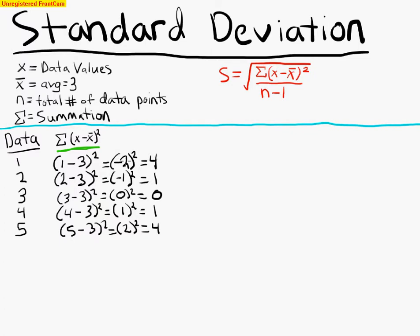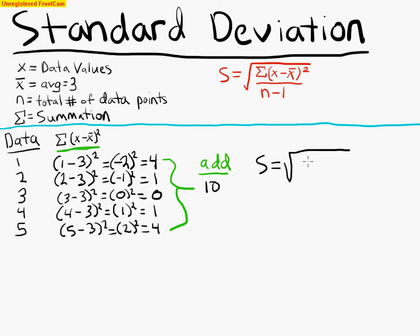So what we're going to do here is we are going to take these values and add them. Once we add them we get 10. So our next step is: s equals the square root of 10 divided by 5 minus 1, which is really 10 over 4.